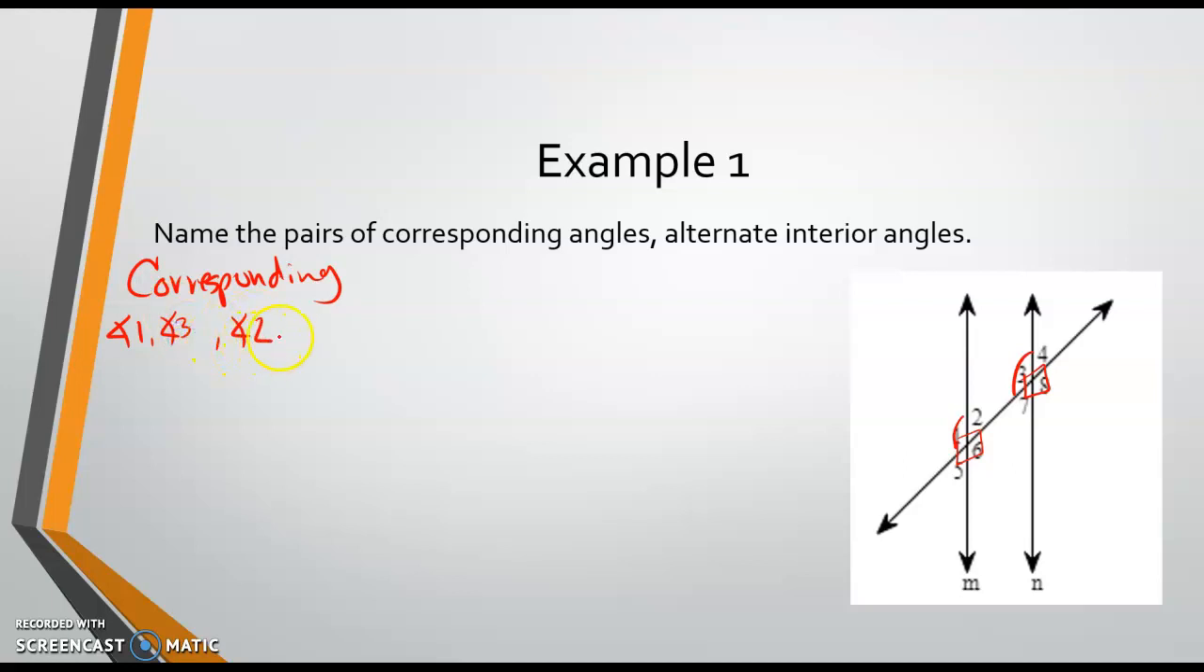Angle two is in the same position as angle four. Angle five would pair up with angle seven. And angle six pairs with angle eight.